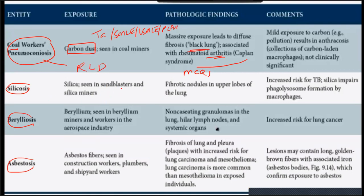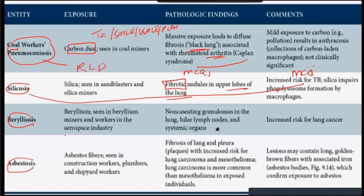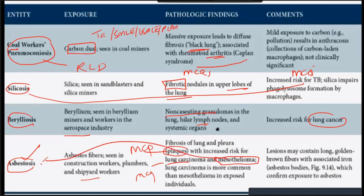Silicosis: people working with silica in sandblasting, silica mines, quartz, granite, and sandstone develop fibrotic nodules in the upper lobes of the lung. These patients have an increased risk for tuberculosis — MCQ, very important. Berylliosis is seen in beryllium mining and aerospace industry workers; it causes non-caseating granulomas and lymph node enlargement, and carries an increased risk for lung cancer. Asbestosis is the most important — asbestos fibers are inhaled by shipbuilders, plumbers, and roofers, and classically affect the lower lobes. MCQ.